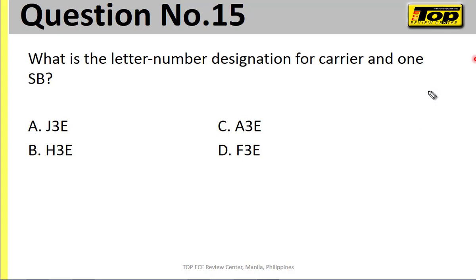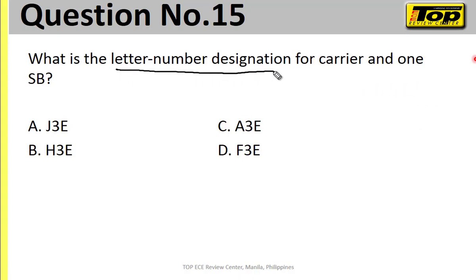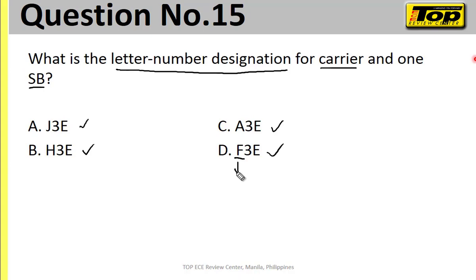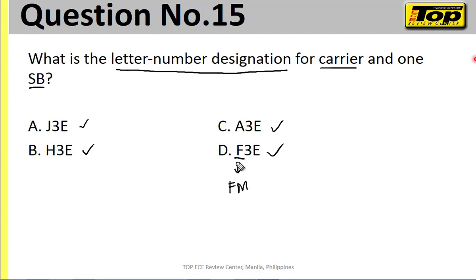Let's move to question number 15. What is the letter-number designation for a carrier with one sideband? The choices are: A — J3E, B — H3E, C — A3E, and D — F3E. Letter D (F) is definitely not correct because F is FM — frequency modulation, which has many sidebands. A3E is double sideband full carrier. J3E is single sideband suppressed carrier.